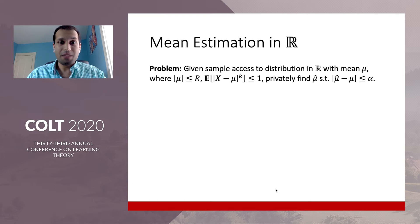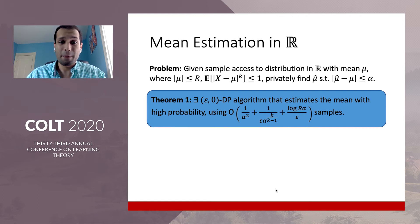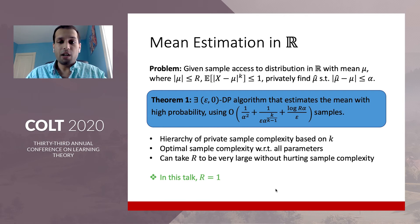Our first result is about mean estimation in one dimension. Given sample access to an unknown distribution with mean mu, the goal is to privately estimate mu. We give an Epsilon-zero DP algorithm using 1 over alpha squared plus 1 over epsilon times alpha to the k over k minus 1 samples. For privacy, we need some bound on the range of the distribution to calibrate the sensitivity — that parameter is r, which bounds the magnitude of the mean. We get a hierarchy of sample complexities based on k, and this hierarchy is optimal. We can allow r to be very large since the dependence on it is logarithmic.